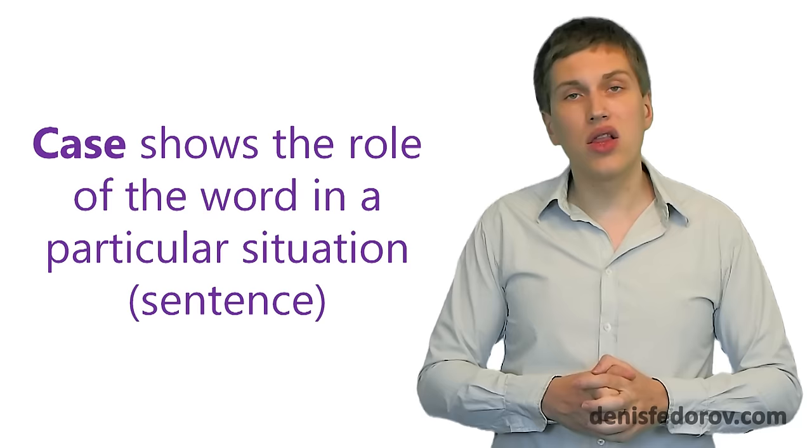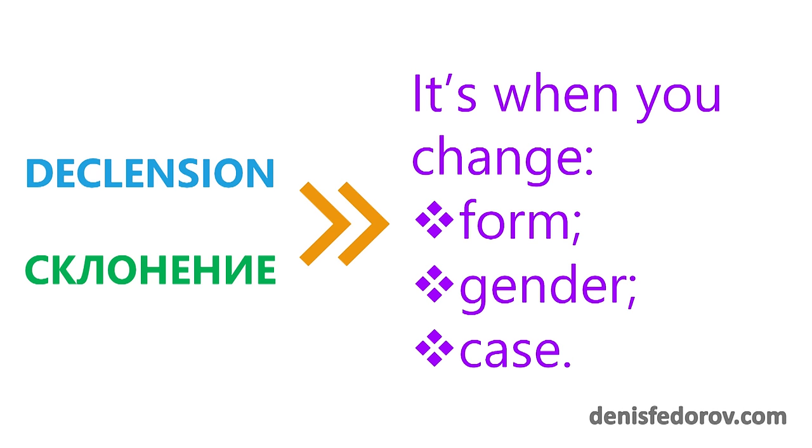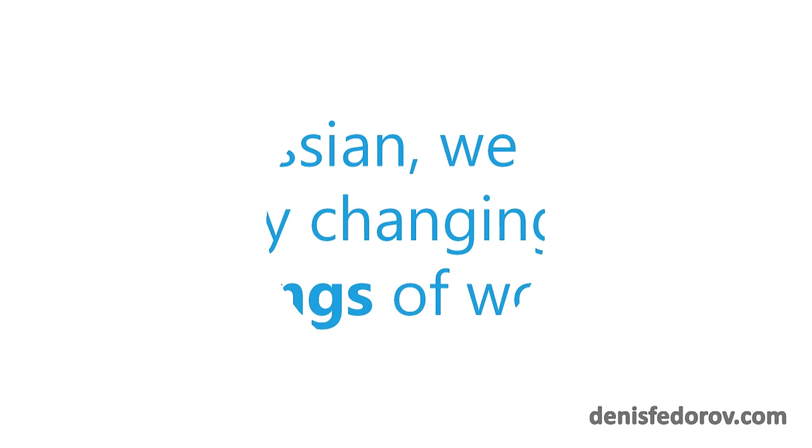Along with cases, a very important moment is declension or in Russian it is called склонение. And declension is when you change the form, gender or the case of the word. And in Russian language it is done via changing the ending of the word. So, declension is the mechanism of changing the word from its original form by changing the case, gender and the form. And again, we decline words by changing their endings. We simply change the last letter of the word or last few letters according to rules.